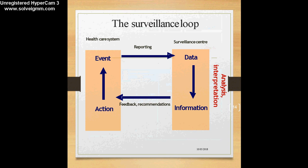This is called a surveillance loop. The healthcare system — hospitals or healthcare units — reports an event or disease to the surveillance center, where all data from different hospitals and healthcare units is collected, collated, analyzed, and interpreted into information. This information is then fed back and recommendations are given for action to relevant agencies. This continues — there is no point in time when this surveillance system stops — that's why we use the word 'ongoing' when we define surveillance.